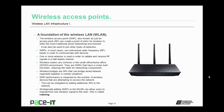Access point performance is impacted by the number of wireless devices attempting to access the network. This can be mitigated by adding additional access points to the network. Strategically adding WAPs to the wireless local area network can allow users to migrate from one wireless signal to the next. This is called roaming.